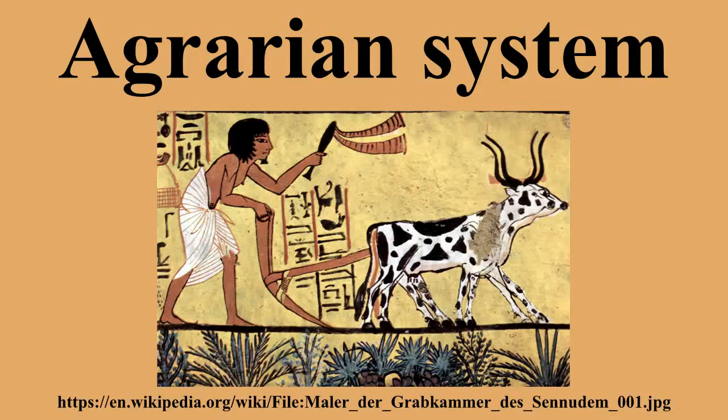An agrarian system is the dynamic set of economic and technological factors that affect agricultural practices. It is premised on the idea that different systems have developed depending on the natural and social conditions specific to a particular region. Political factors also have a bearing on an agrarian system due to issues such as land ownership, labor organization, and forms of cultivation. As food security has become more important, mostly due to the explosive population growth during the 20th century, the efficiency of agrarian systems has come under greater review.